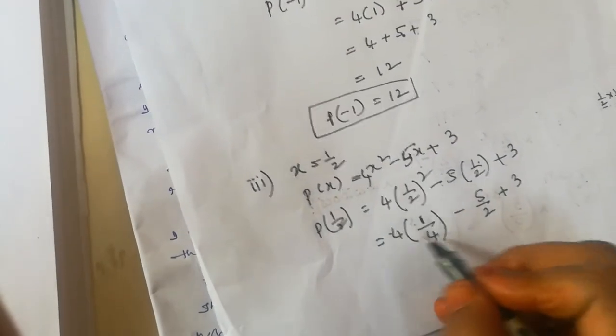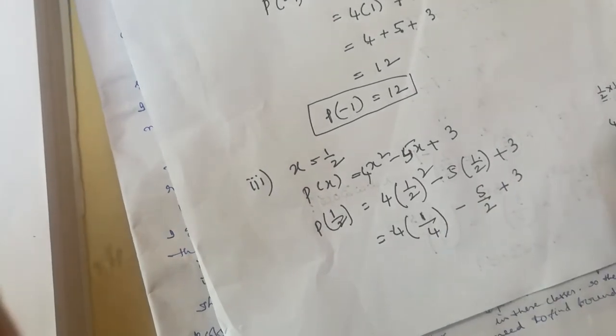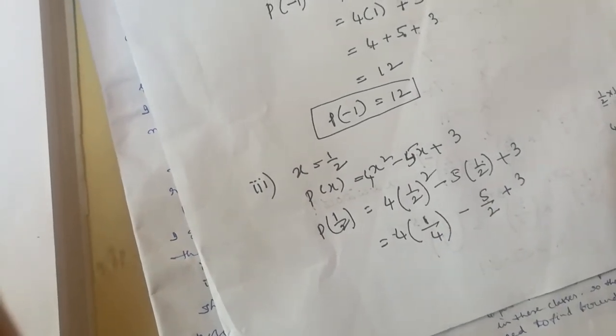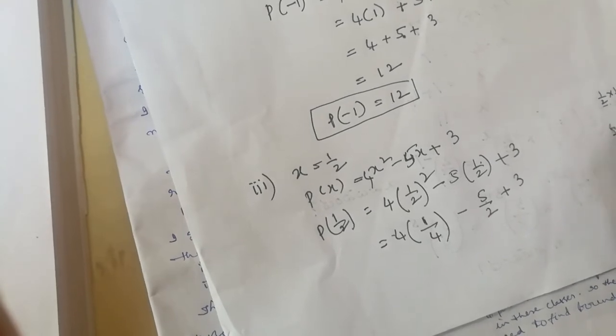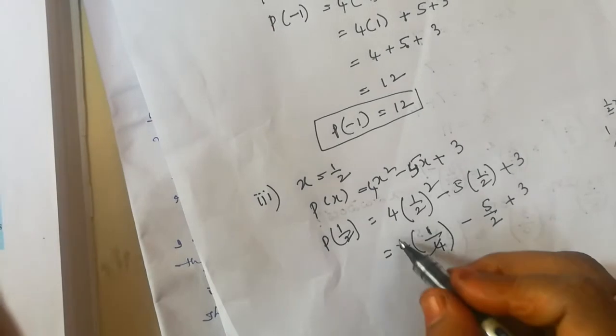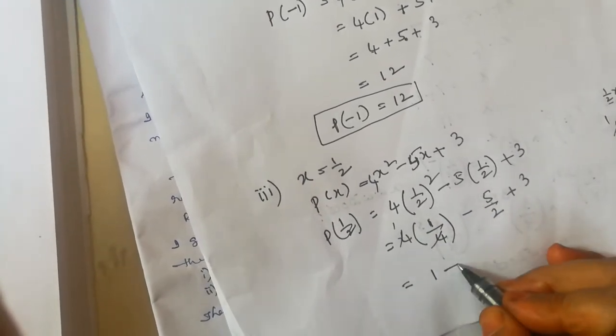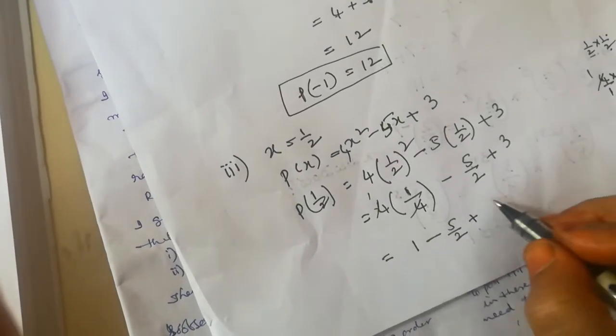Now the relation here is multiplication: 4 times 1/4. Since the numerator and denominator are the same, 4 divided by 4 is 1. So we get 1 minus 5/2 plus 3.